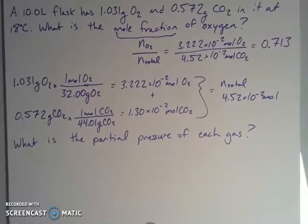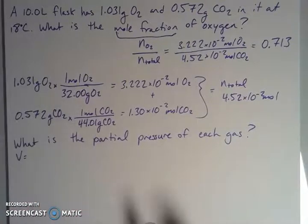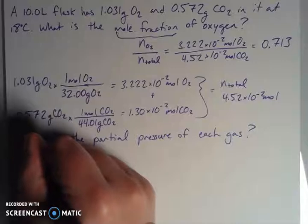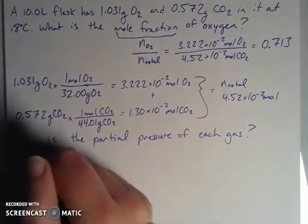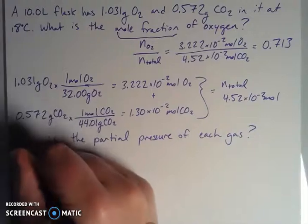Now let's look at the follow-up to this. What is the partial pressure of each gas? If we're talking about partial pressures now, we probably are going to be thinking about PV equals nRT. So let's start listing out the variables that were given and then figure out what we're missing.